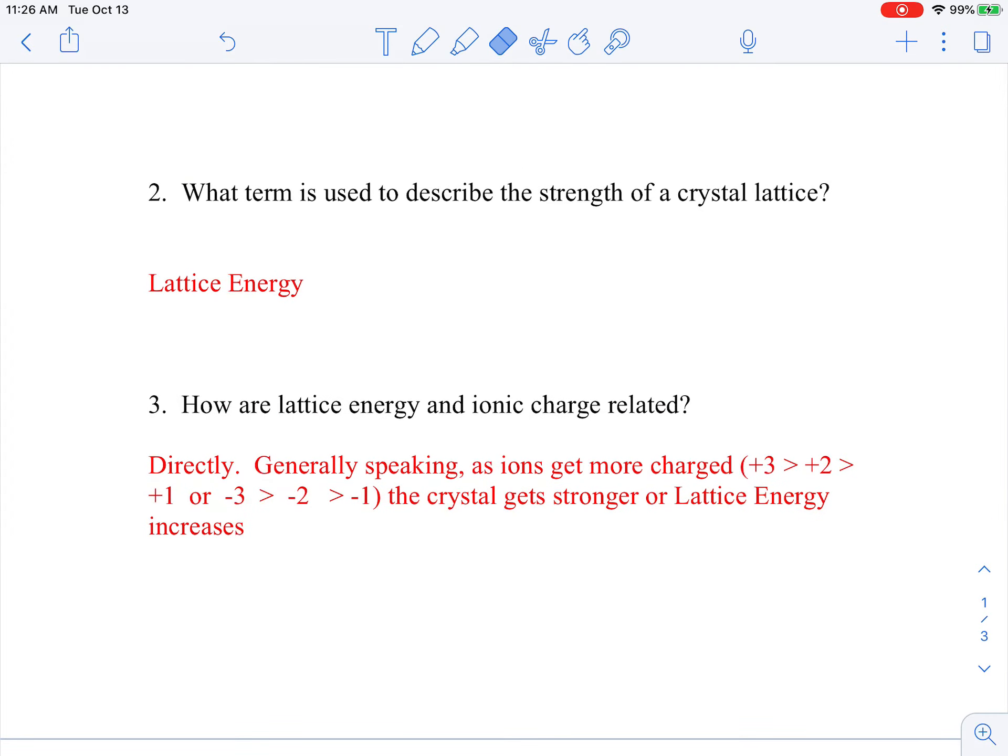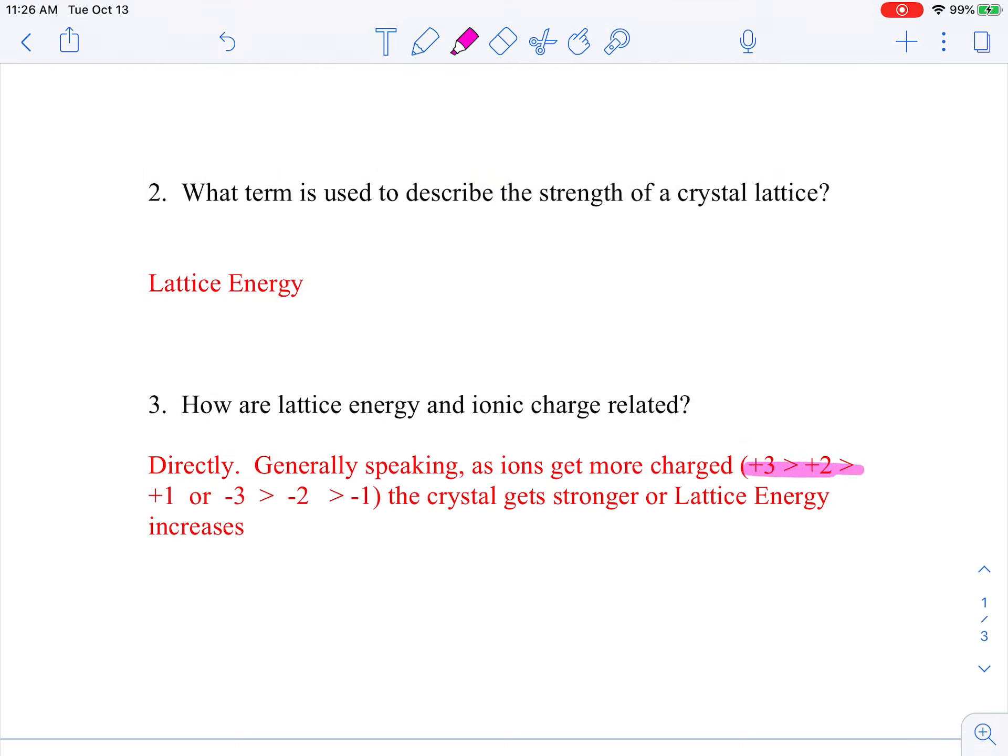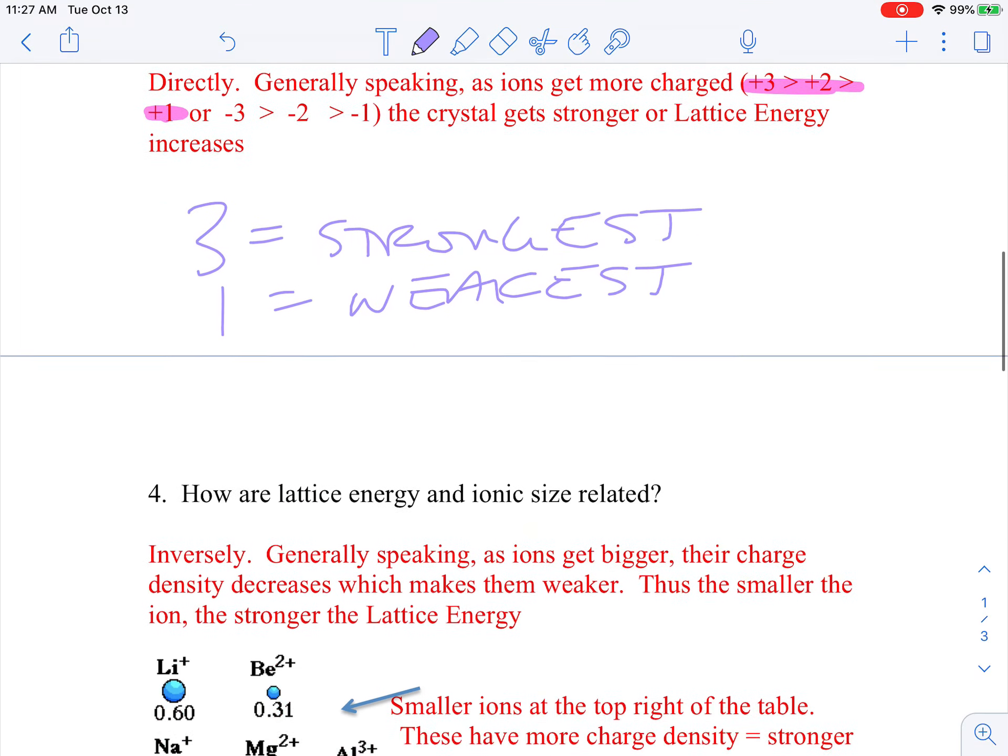I'm talking about lattice energy and this right here is where we start talking about their charges. Your charges are plus one, plus two, plus three, minus one, minus two, minus three. Three is the strongest and one is the weakest.